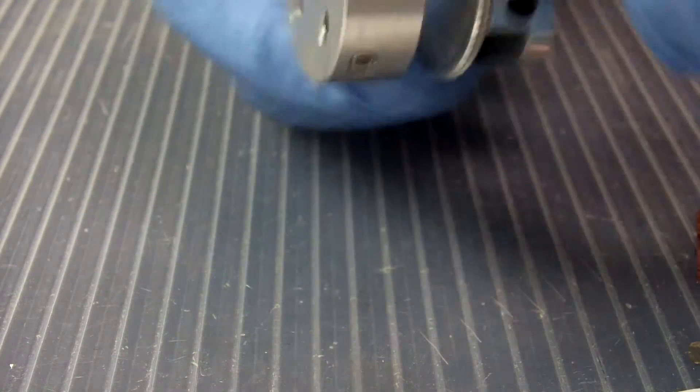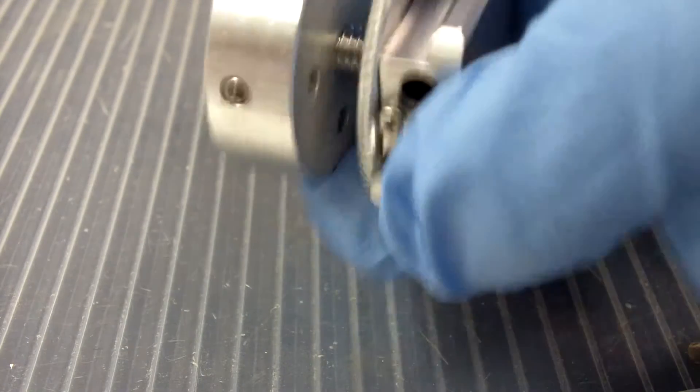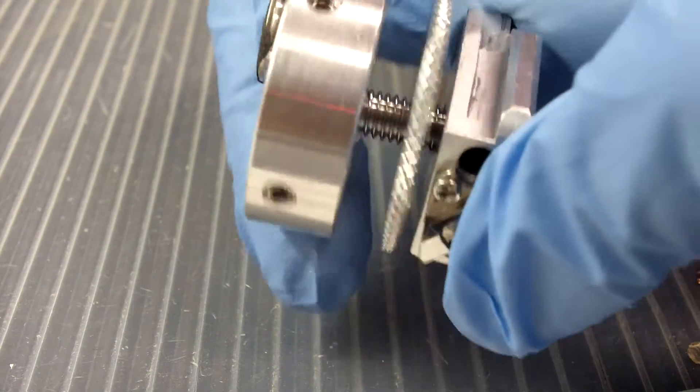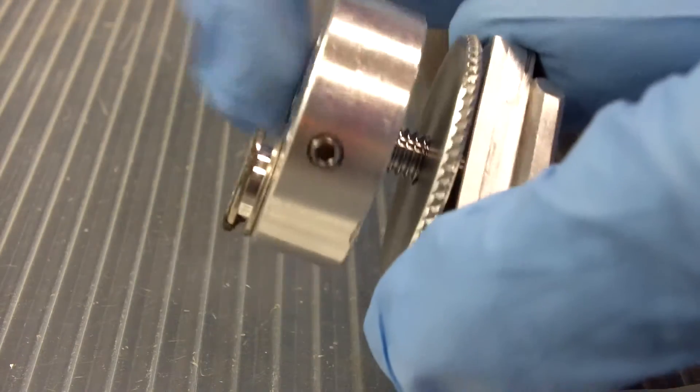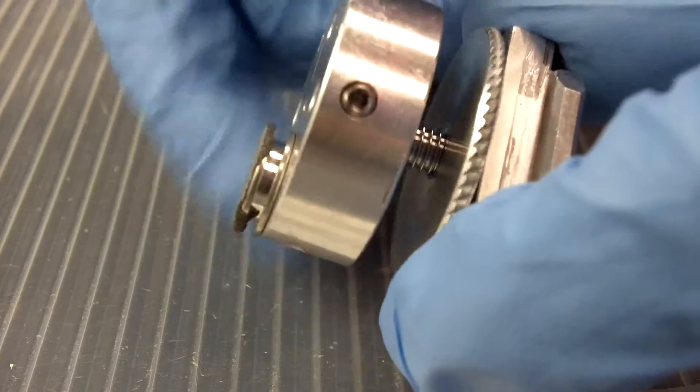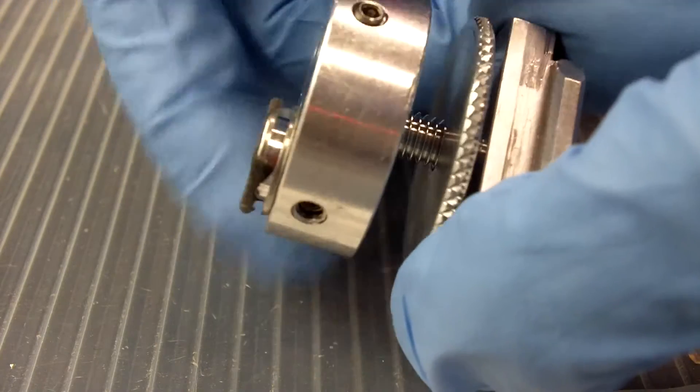Now if I need to adjust the height of the sample up or down, all I need to do is loosen the locking ring like this and screw the screw in and out of the base to make it go higher or lower or lower and higher.